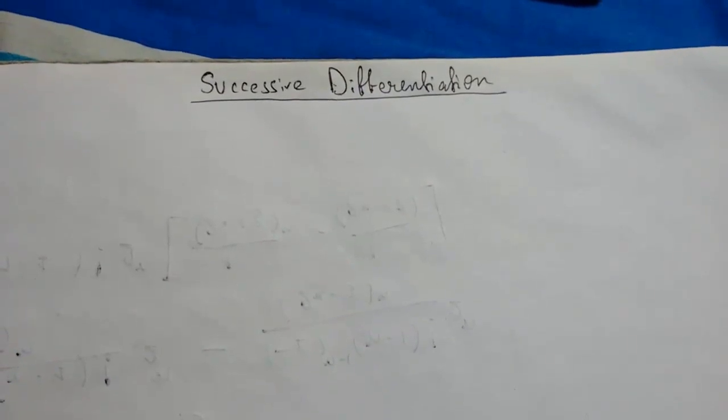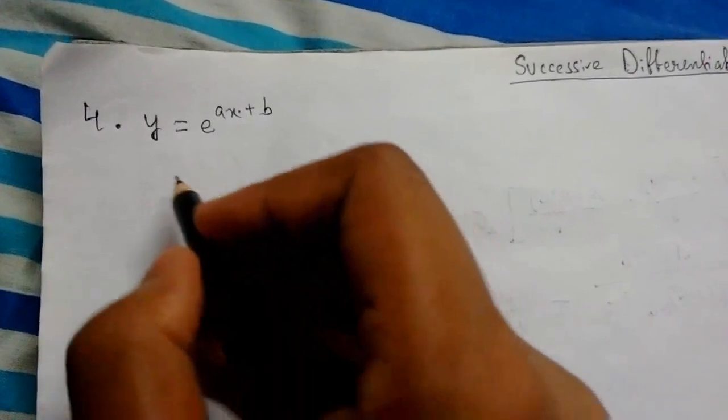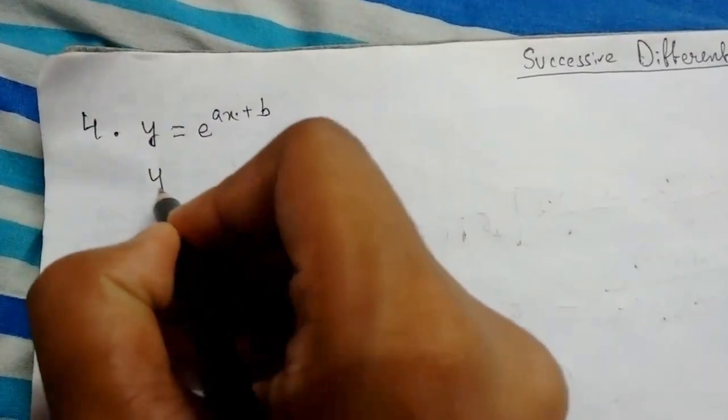Welcome back everybody. Today in this video lecture we'll be continuing successive differentiation. Number 4: y equals e to the power ax plus b. So let's get started. We'll differentiate it for the first time.